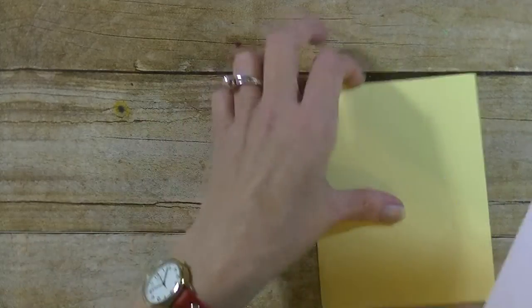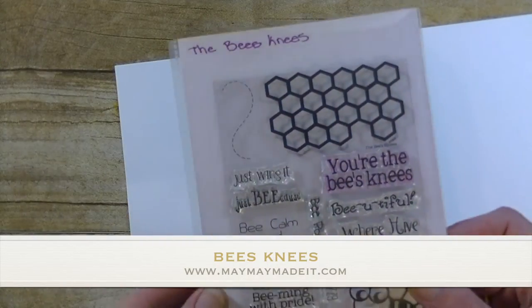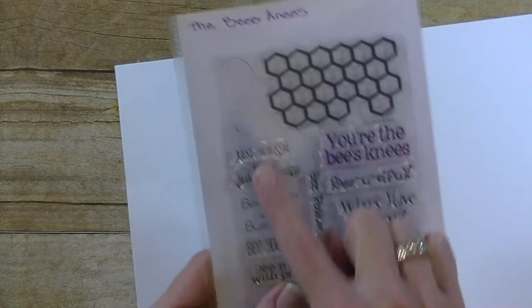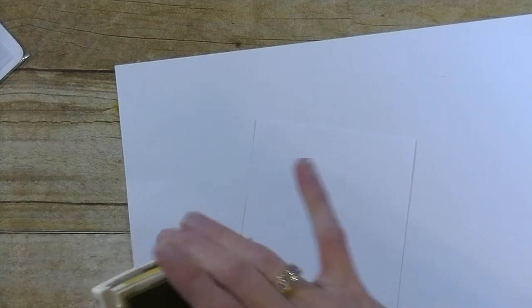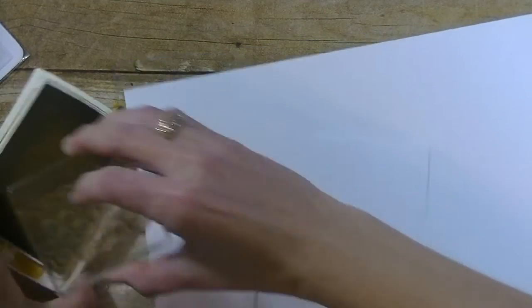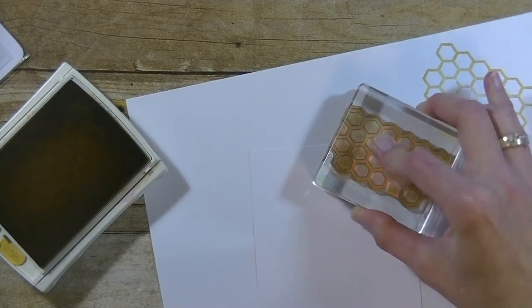The first thing we're going to do is make our own background paper. I'm going to bring in a scratch piece here. The stamps I'm using are from MayMay Made It. It's called the Bee's Knees, one of my favorites. I'm using the honeycomb, the trail, the greeting, and also the bee himself. I'm going to bring in some yellow ink. This is Stampin' Up Hello Honey. I'm going to grab the honeycomb, ink it up, stamp off, and then stamp on my paper.